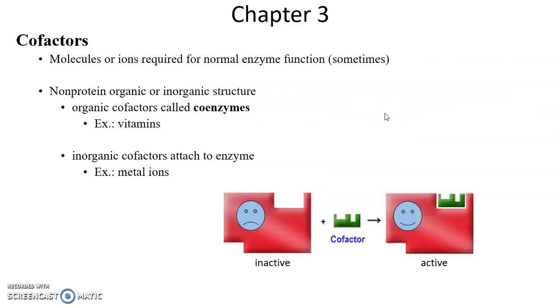Cofactors are other things the enzyme needs to function. Some enzymes need cofactors, other enzymes are independent of cofactors. Here we have an inactive enzyme, add its cofactor, now it is a happy active enzyme. Non-protein organic or inorganic structures can be cofactors. If it's organic, then it's often called a coenzyme. Examples of these coenzymes include many of the vitamins we consume. Inorganic cofactors are frequently metal ions like iron, copper, magnesium, or sodium.